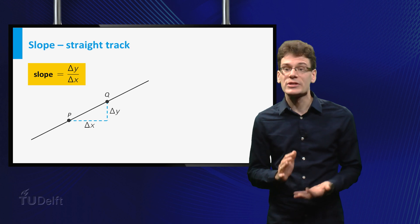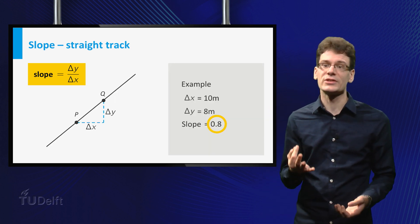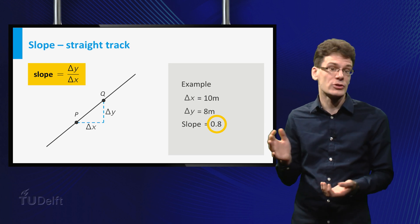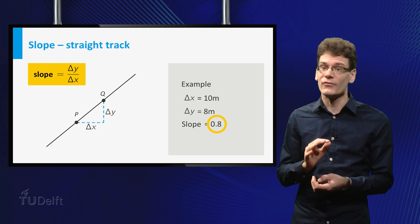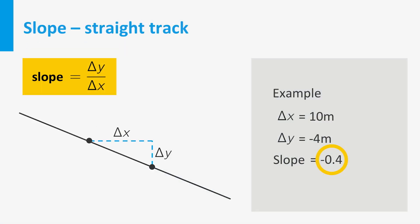As you would expect, the slope is a measure of steepness. If the track is steeper, then for a fixed delta x, the corresponding delta y will be larger, and so the slope will be larger. Finally, descent corresponds to a negative slope. If delta x is positive, say 10 meter, the corresponding delta y will be negative, say minus 4 meter. Therefore, the slope will be negative, in this case minus 0.4.